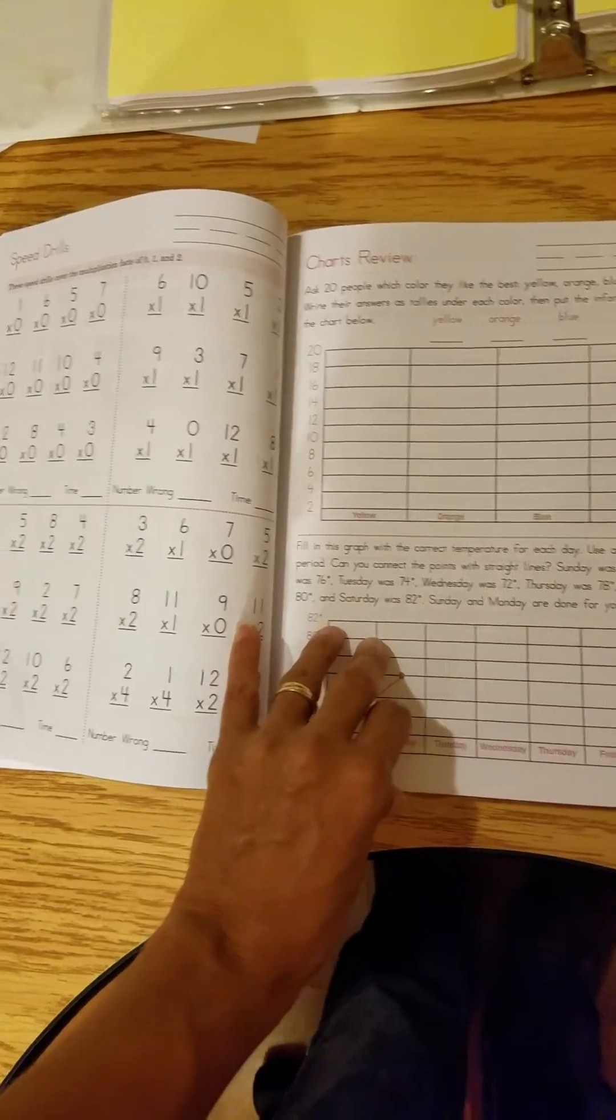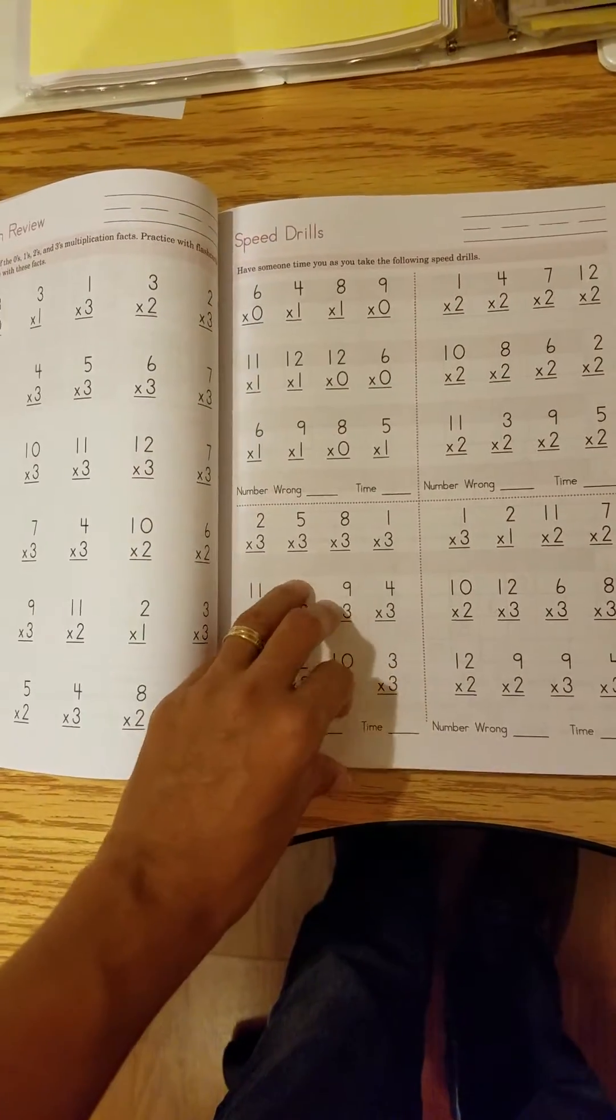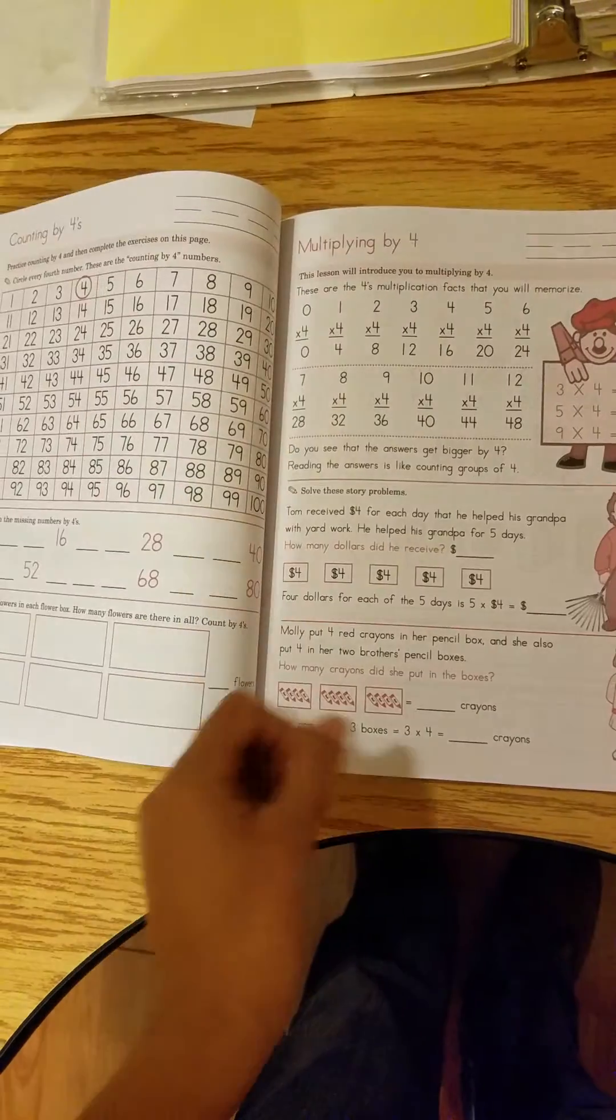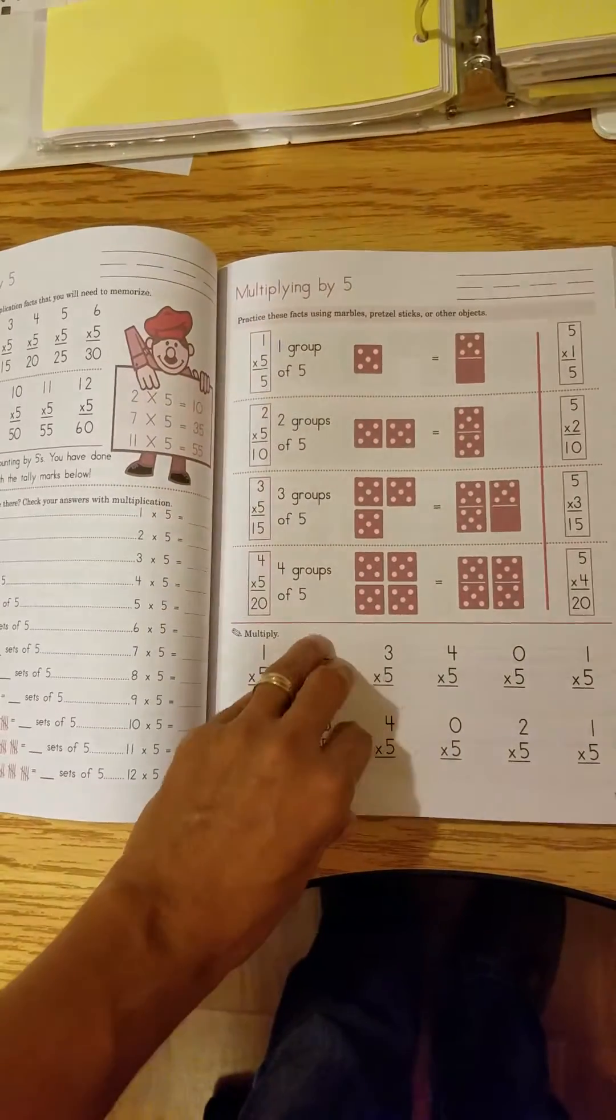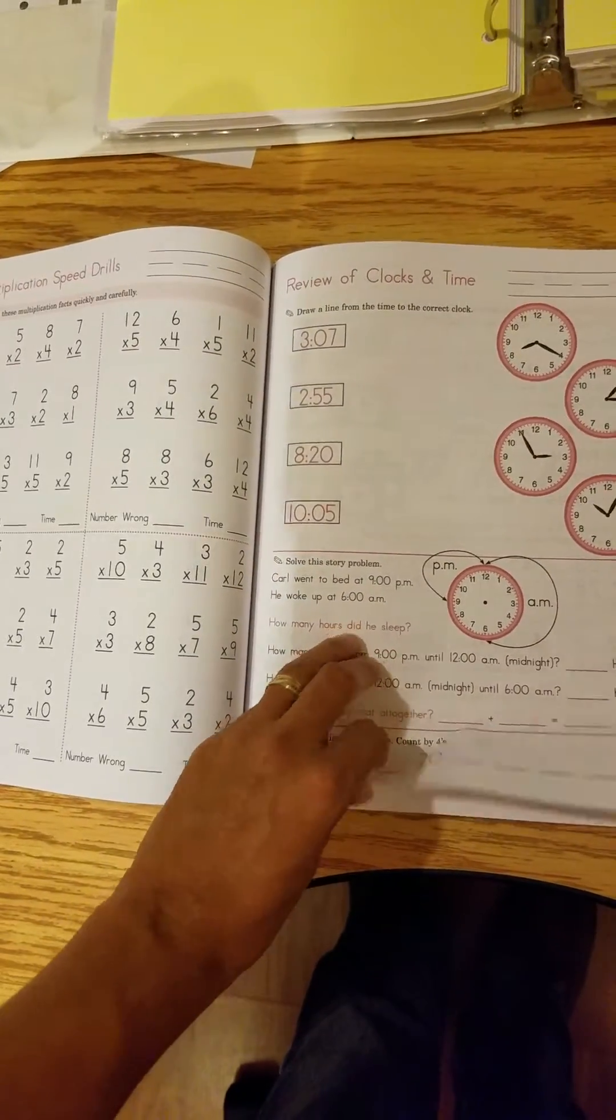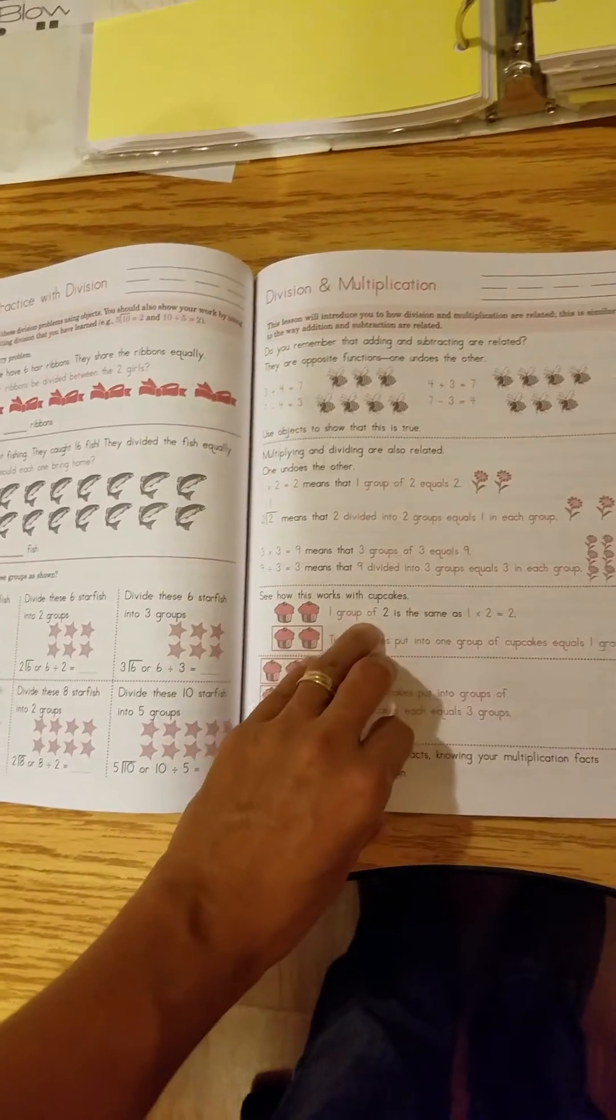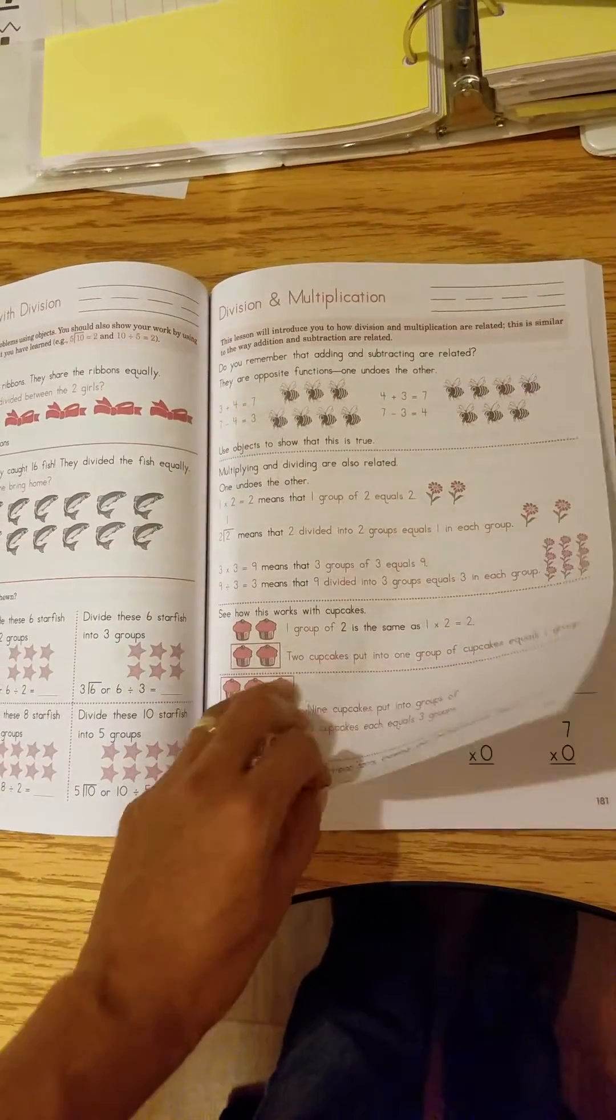Speed drills, charts, some more speed drills and multiplication. Multiplying by four, counting by fours. Multiplying by five. Clock review. Division and multiplication here.